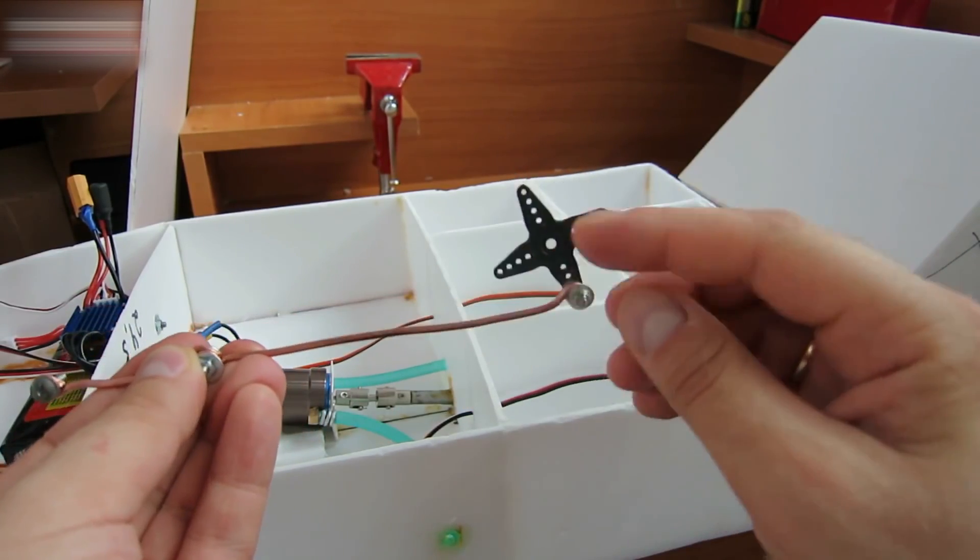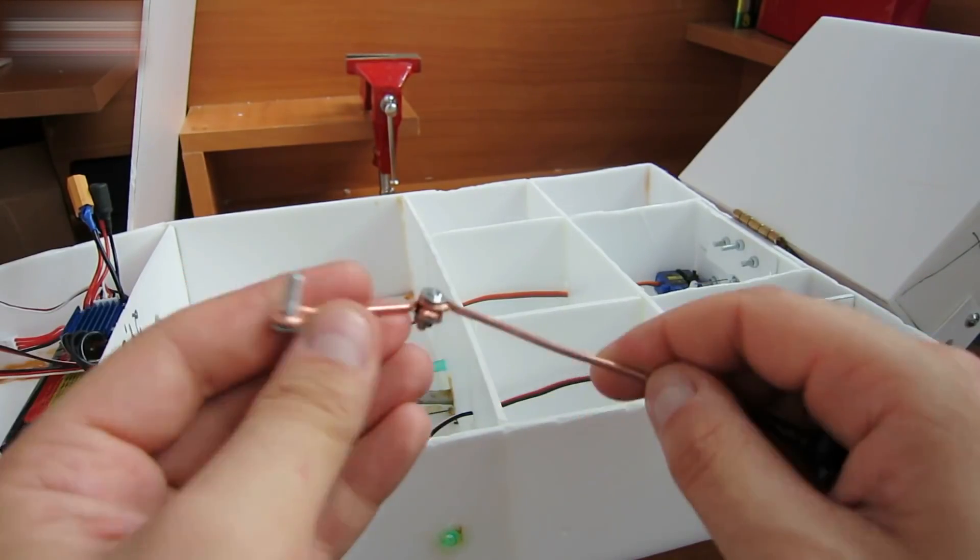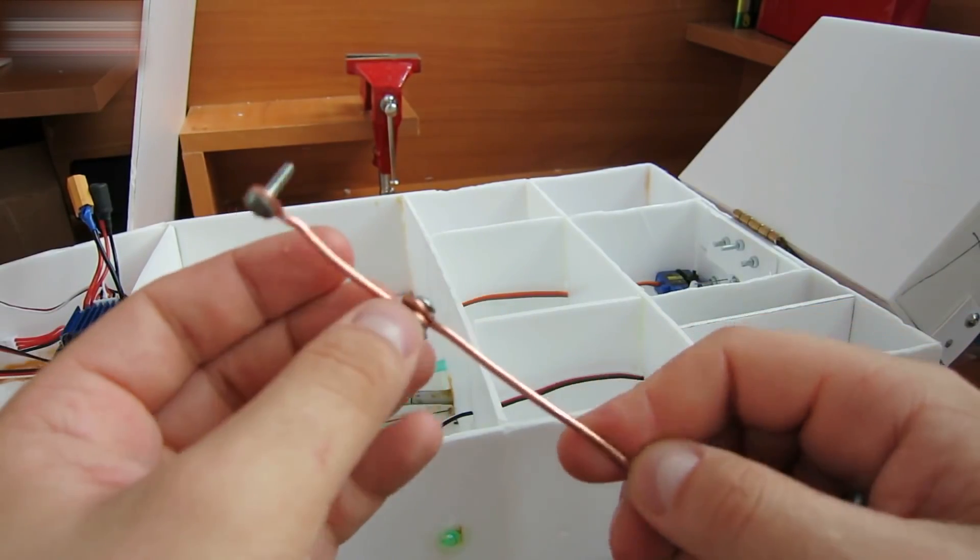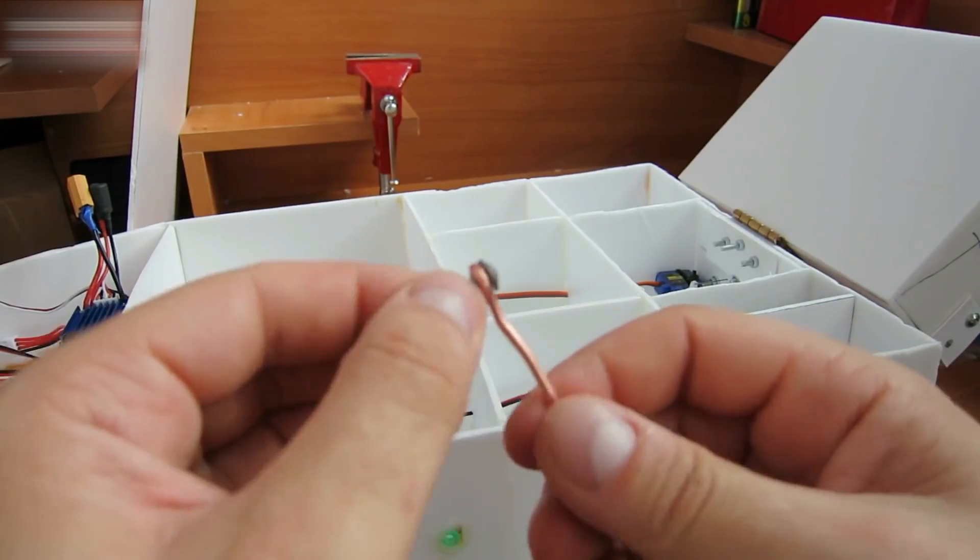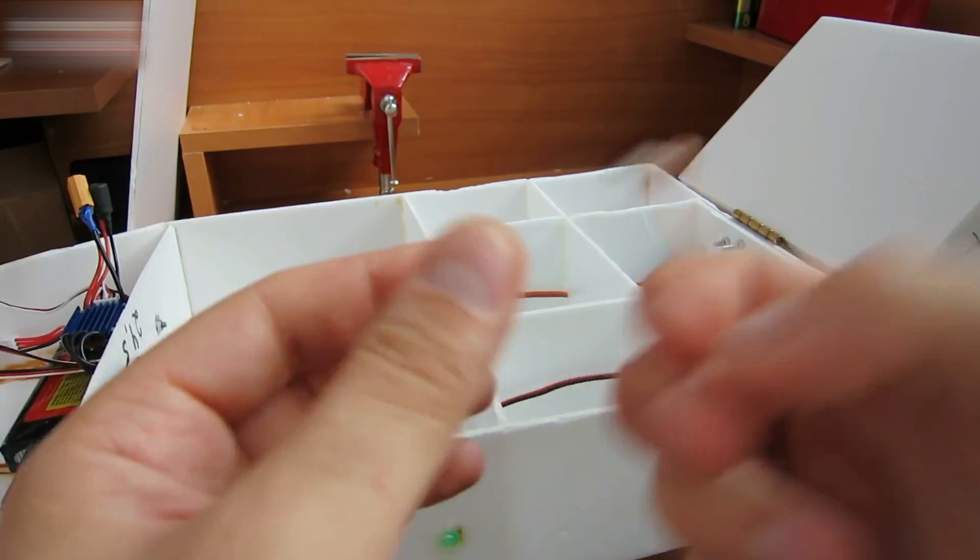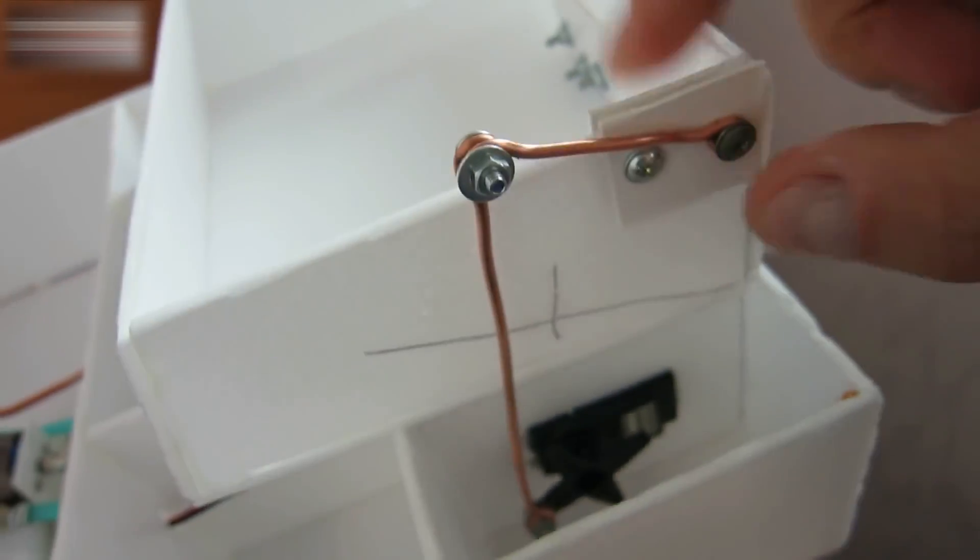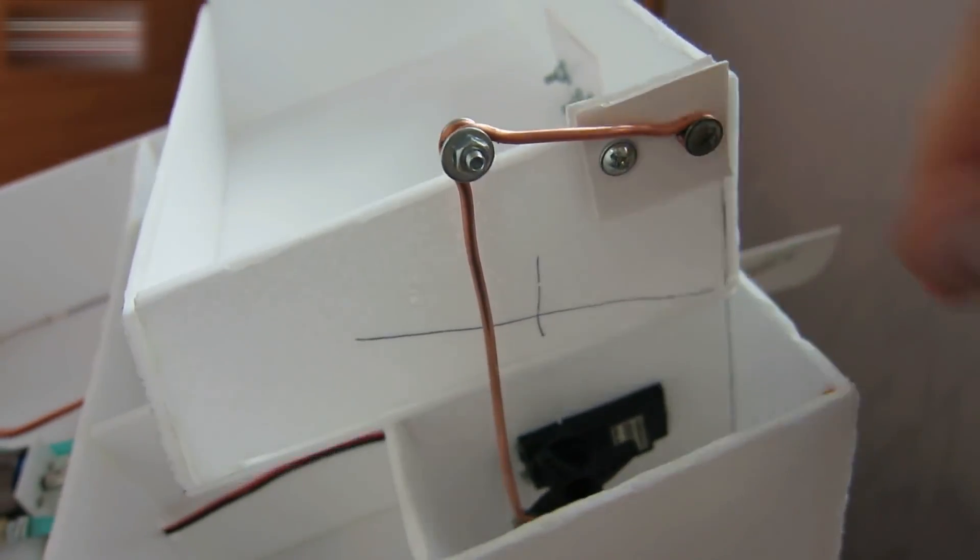I also soldered this on top. We need a moving system with a small screw here. Glue it into place. We also need a moving part here. It should look like this. It should be fixed but not so tightly that it can't move.